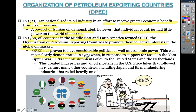This was most clearly demonstrated in 1973 when, in response to support for Israel in the Yom Kippur War, OPEC cut off shipments of oil to the U.S. and the Netherlands, creating high prices for those nations. Price hikes followed in 1974 and hurt many other countries, including Japan and its manufacturing industries that relied heavily on oil. Here's a political cartoon poking fun at the U.S.'s reliance on Saudi oil.